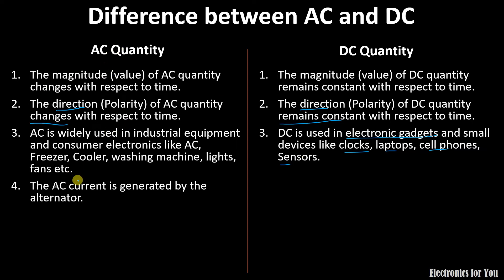The source of AC is alternator. We can say that it is an AC generator whereas in case of DC, it can be generated by DC generators, battery, solar cell, etc. There are many sources for the direct quantity.